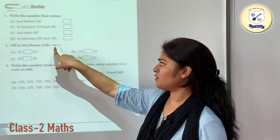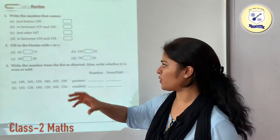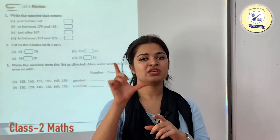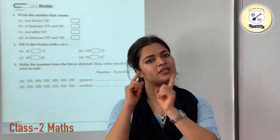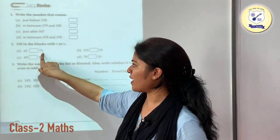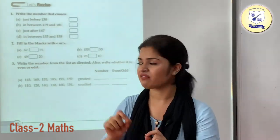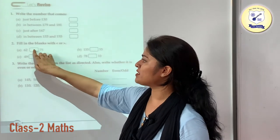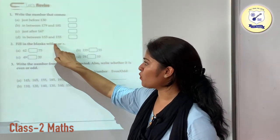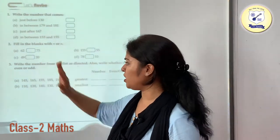Fill in the blanks with the greater-than or less-than symbols. Find out which number is greater and keep the symbol mouth open on the side of the larger number. Among 62 and 75, the larger number is 75, so we put the symbol opening towards 75.